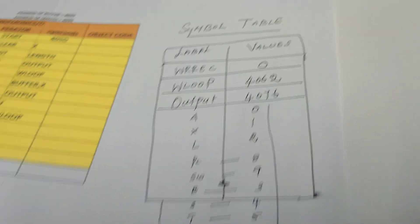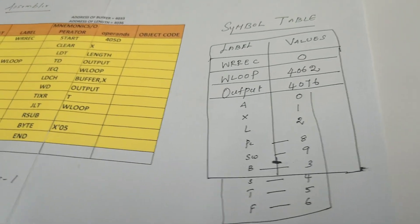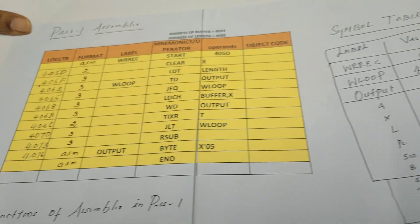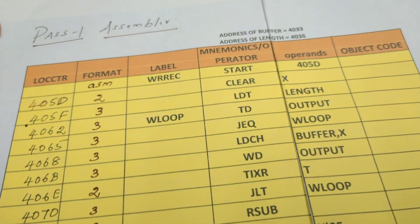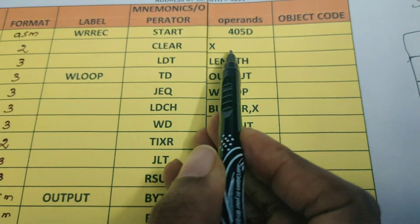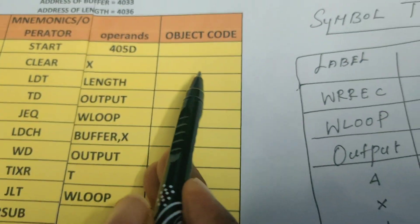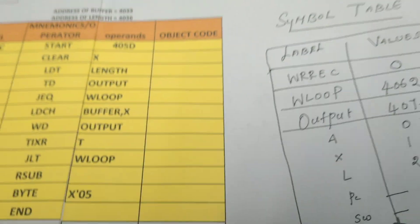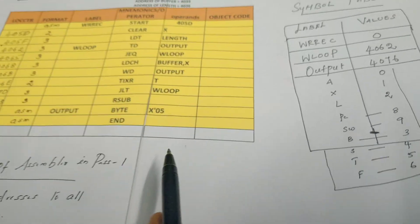So these are the actions or the functions done by the assembler during Pass 1. In Pass 2, every instruction is assembled or translated into its corresponding object code. That we will see in another video. Thank you.